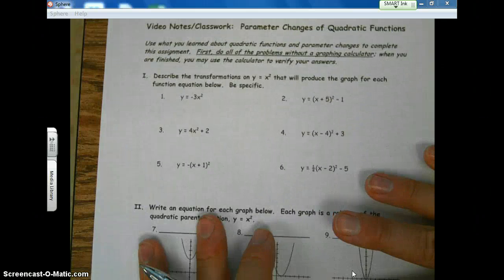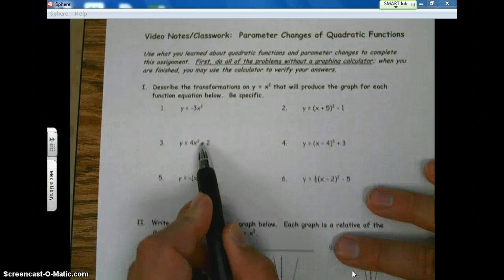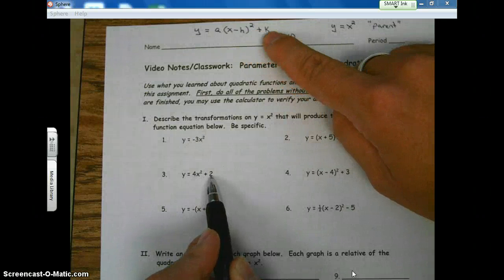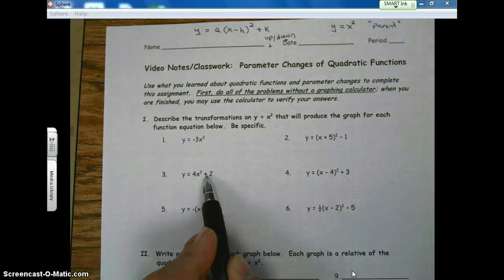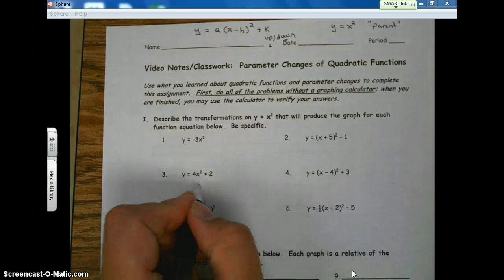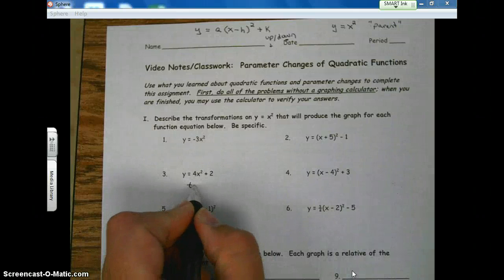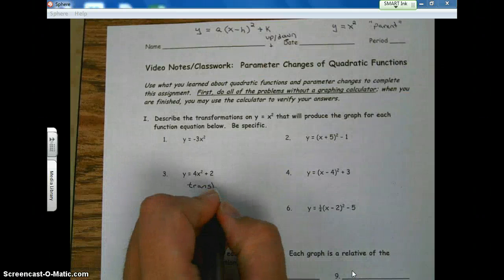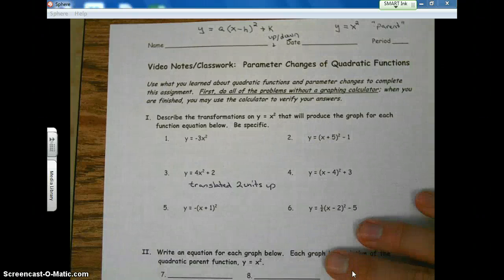So let's look at an example. Look at number three. Here is a k value. Notice it's not in parentheses. Here's the parentheses. It's not in parentheses. It's on the end. And so it is a parameter that moves the function up or down. Plus, it moves the function up. So we say, to describe it, we say it translated the parent function two units up.